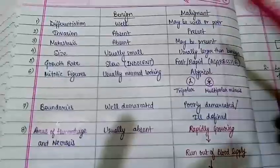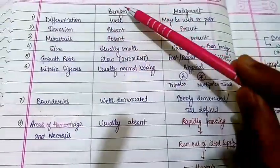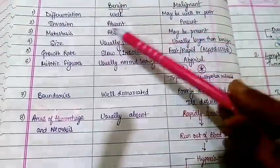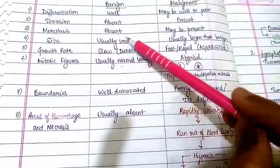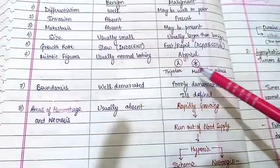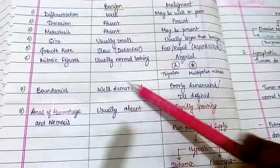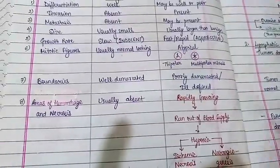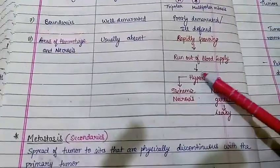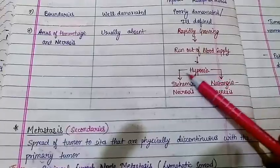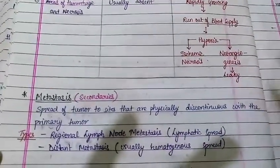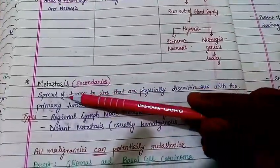Comparing benign and malignant tumors: benign are well-differentiated while malignant may be poorly or undifferentiated. Invasion is absent in benign, present in malignant. Metastasis is absent in benign, may be present in malignant. Benign tumors are usually small, slow-growing, with well-demarcated borders and normal-looking cells. Malignant tumors are usually larger, faster-growing, with ill-defined borders, atypical cells, and areas of hemorrhage and necrosis due to outgrowing blood supply and abnormal new angiogenesis.